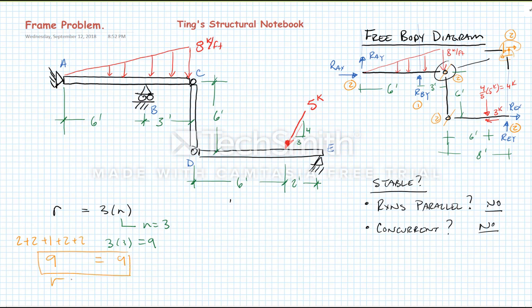Because r is equal to 3n, we can conclude that it's determinant, and therefore we can solve this with the equations of equilibrium. In the next video, I'm going to start at this point and we're going to solve for the unknown reactions.